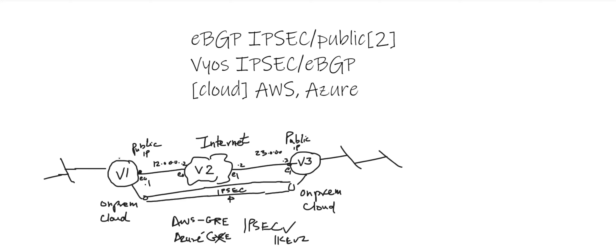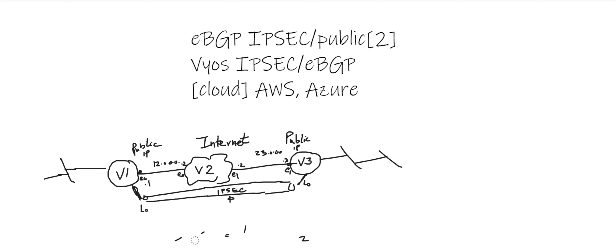Once you have that, you need one more public IP to create your IPSec. In my case I'm using loopback on both sides. On Vios 1 I'm using a loopback with one address, and on Vios 3 I'm using a loopback with another address. I'll show you the config and pay attention to how the IPSec configuration looks.